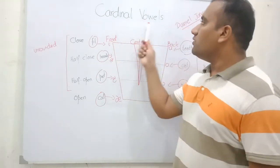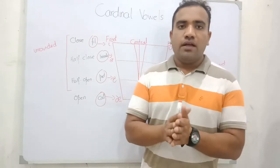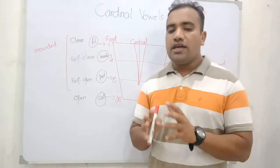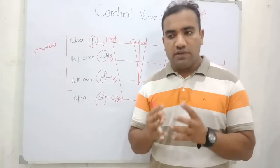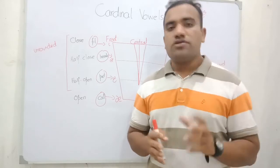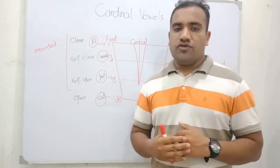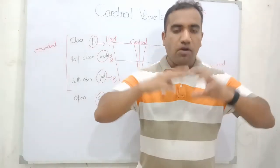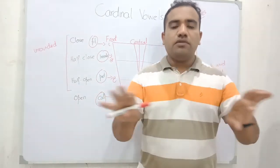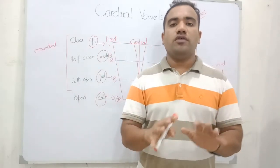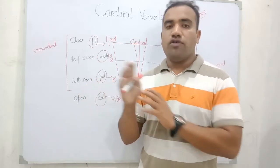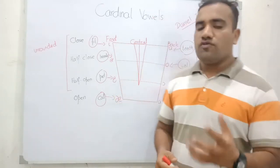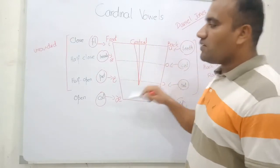Our topic is the cardinal vowels. As I have told you, this is the concept developed by Daniel Jones. He developed the very initial points and initial concepts. When we describe the vowels, we must have a framework, a model. After applying that particular initial model, we can find out the vowels in any language we are working on. He has told us that there are some cardinal vowels, and these are the basic vowels.